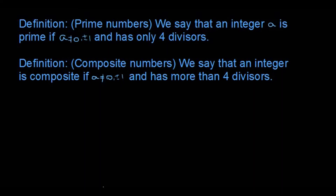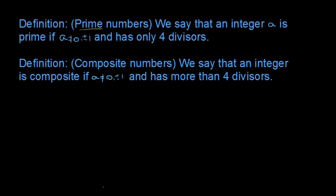The first one is prime numbers. We say that an integral, a, is a prime number if a is not 0 or ±1, and it has only 4 divisors. A few examples: ±2 has 4 divisors, which are ±2 and ±1.